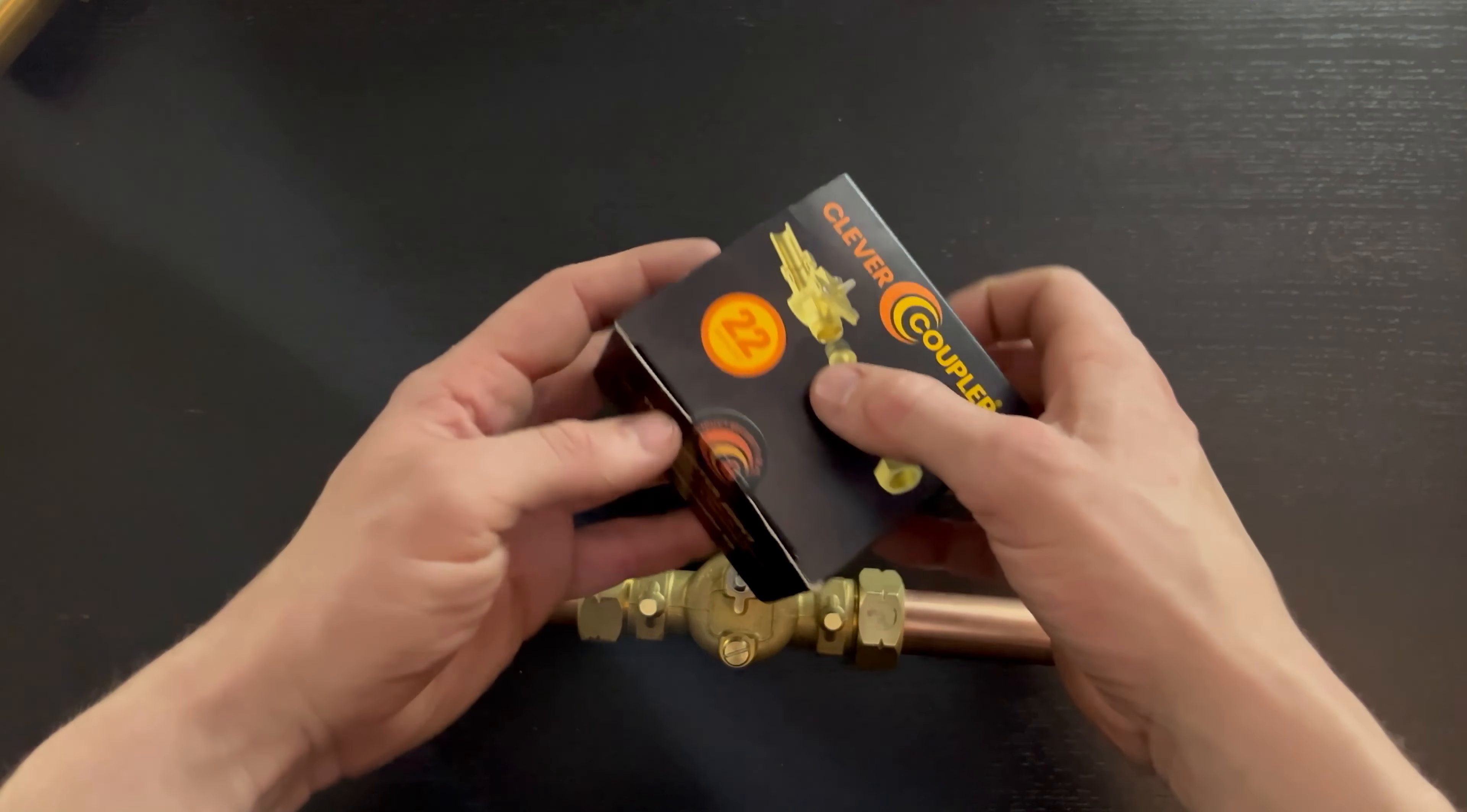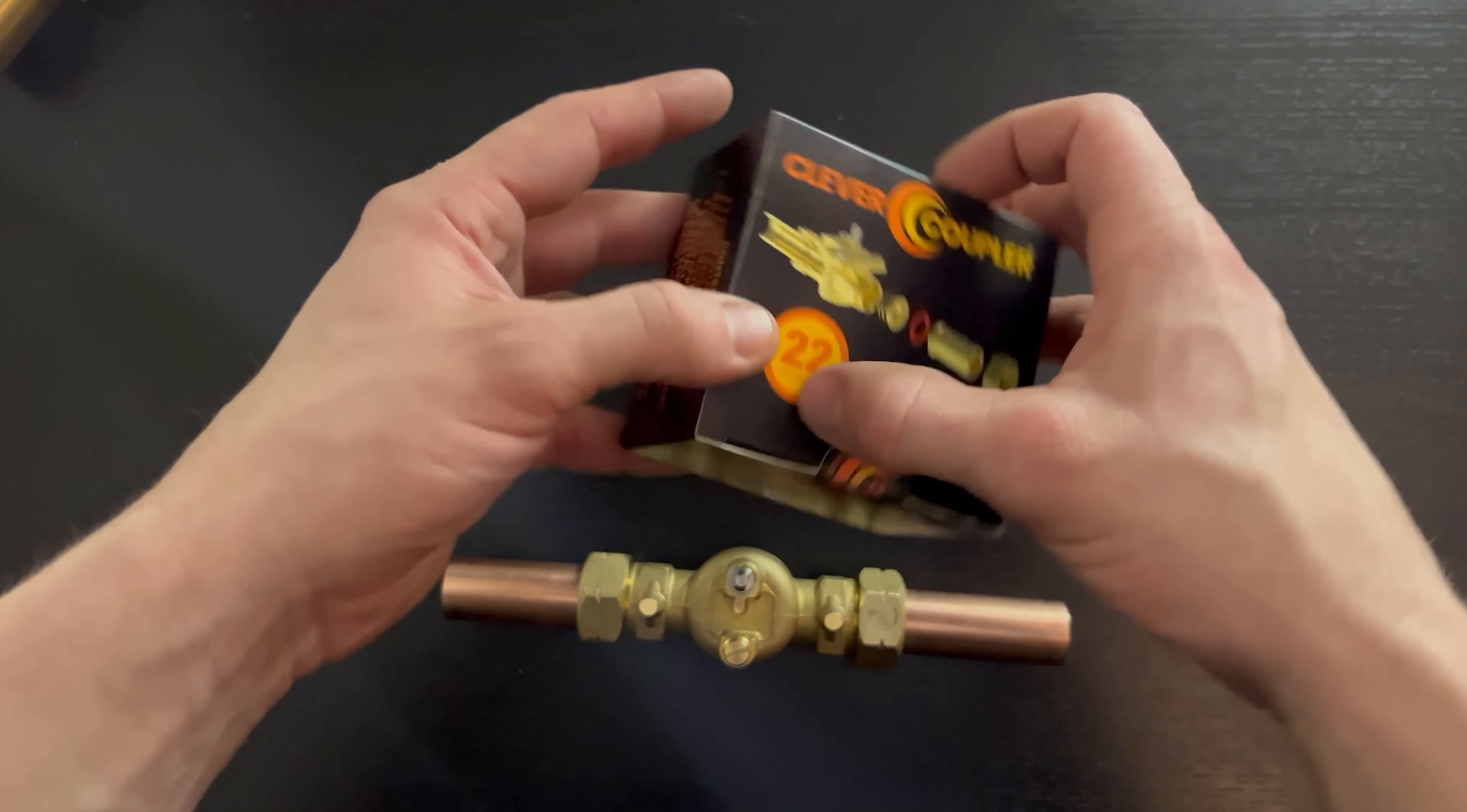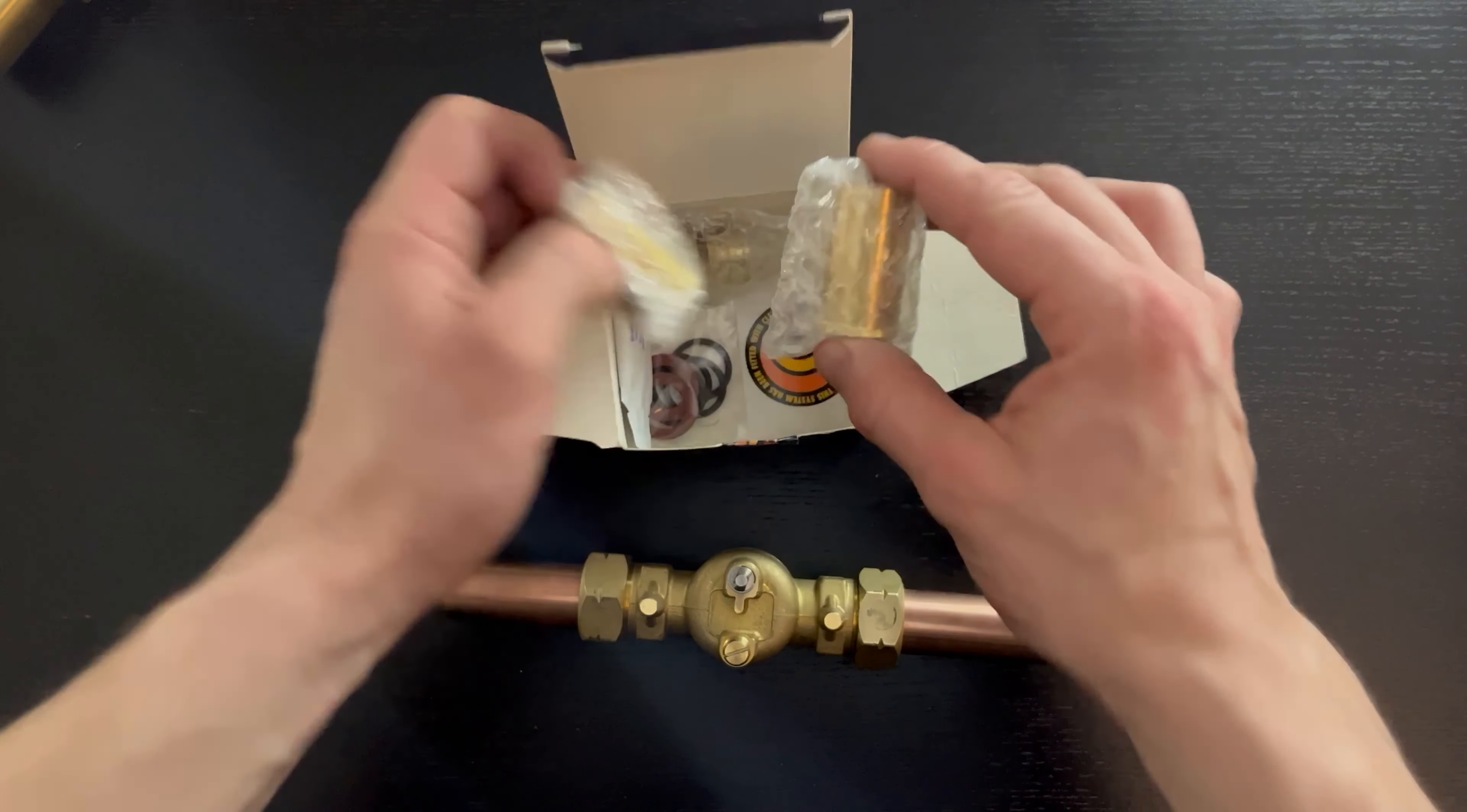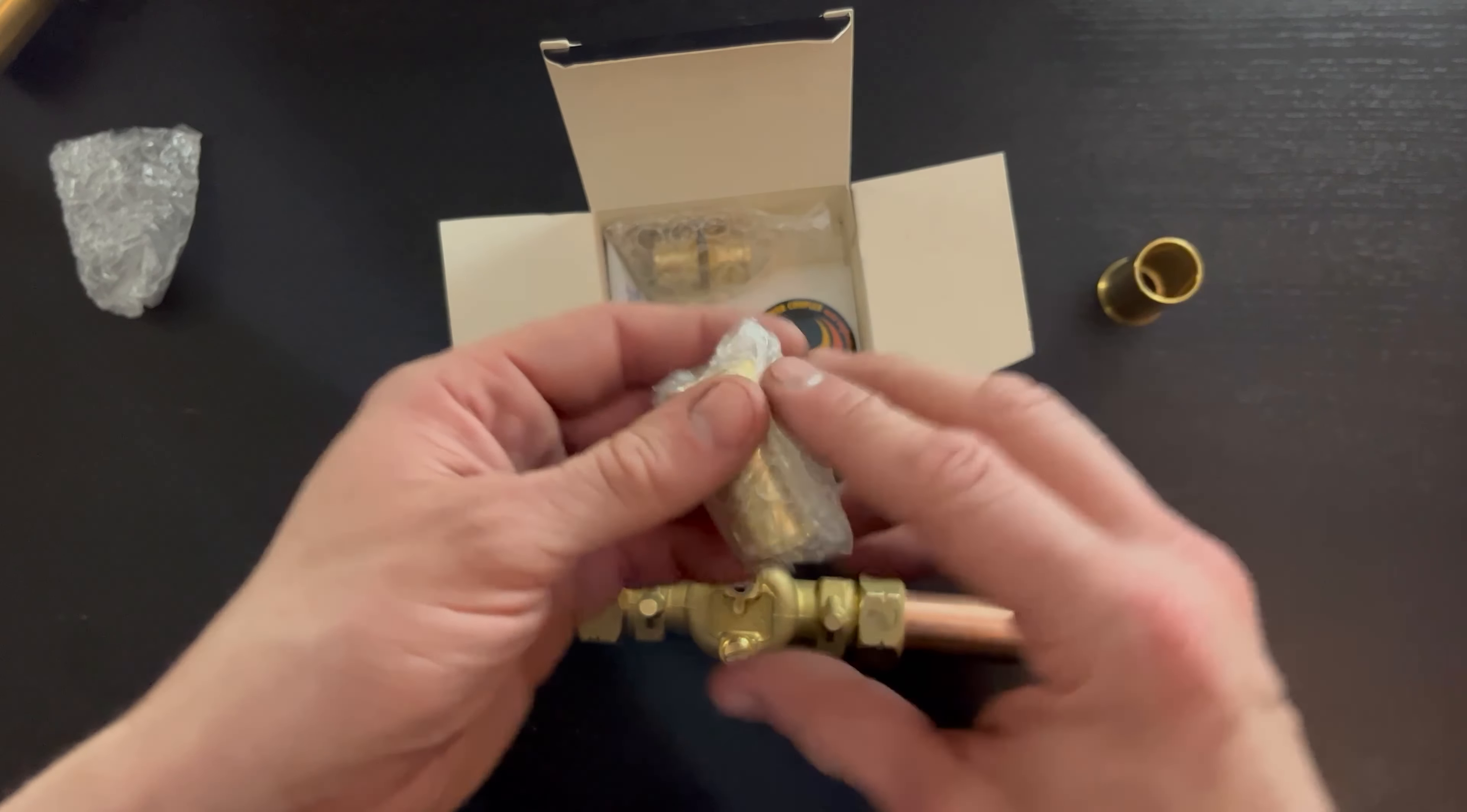Inside the box there's a QR code on the side that will take you to the website, security seal on the front. Pop the box open and inside what you find is two stub adapters both with laser etched Clever Coupler logo on it.